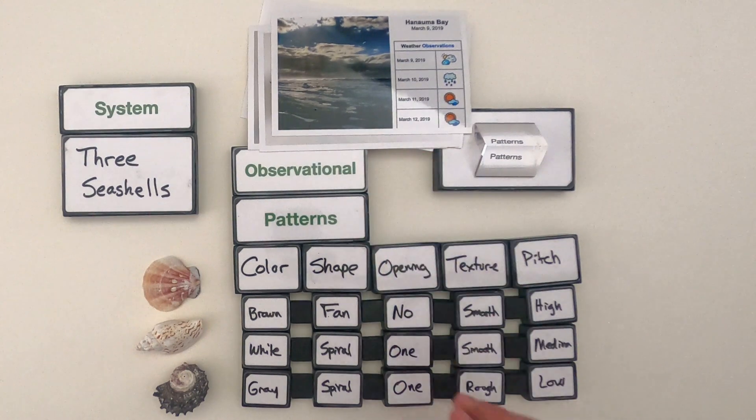Observational patterns is always step one as we start to understand systems. And that's patterns, observational patterns level one, and I hope that was helpful.